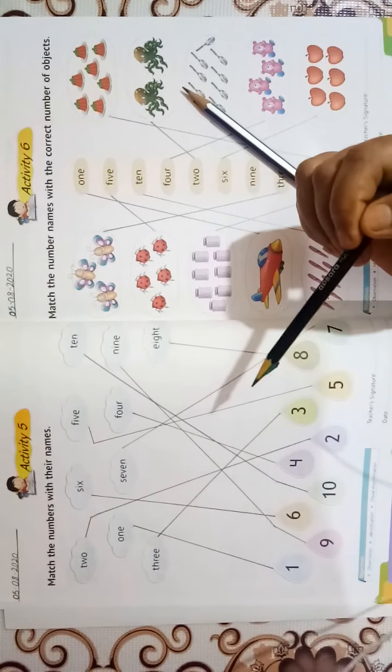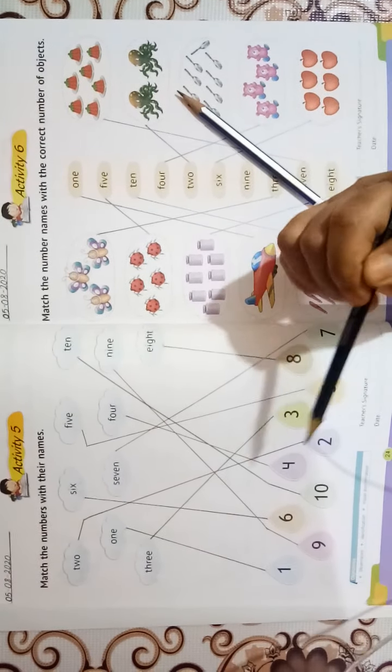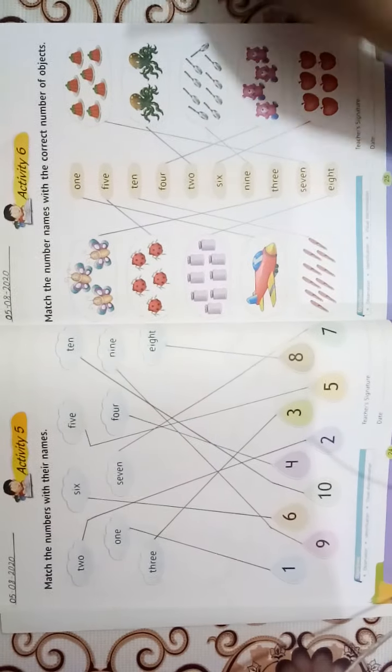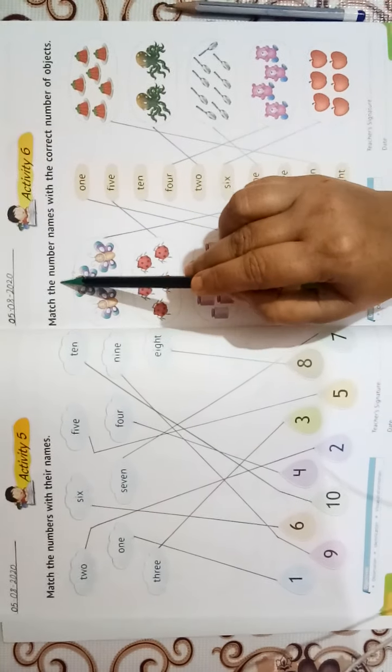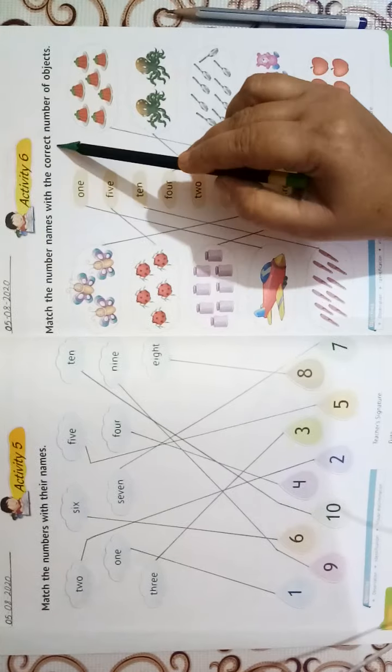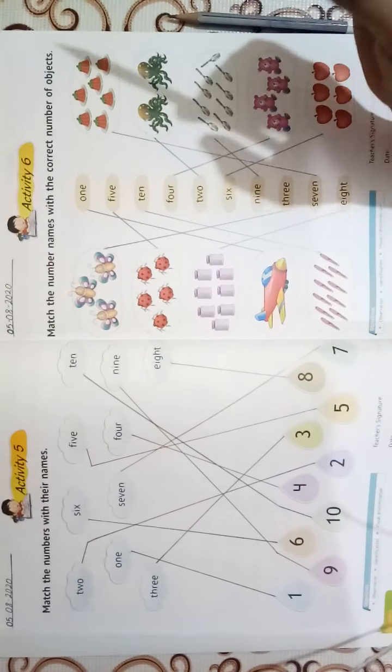This is how you will do this page. That is page number 24. Now, page number 25, match the number names with the correct number of objects.